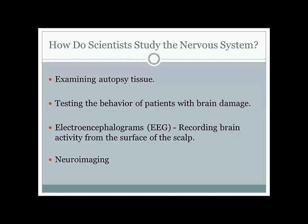That's where we need things like neuroimaging. The rest of this mini-lecture is going to cover different types of neuroimaging available to psychologists and others studying how the brain works.